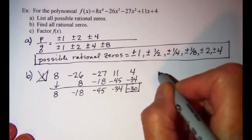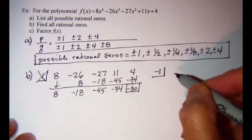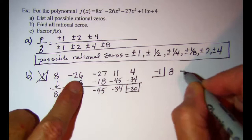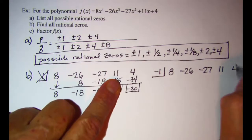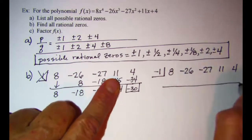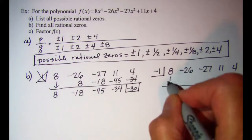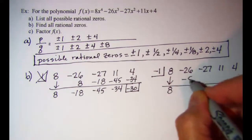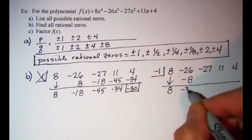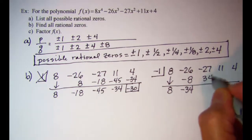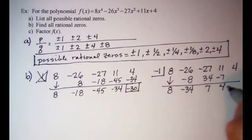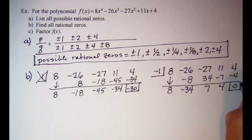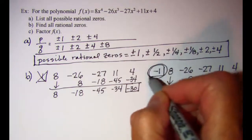Let's try k = -1 with the same coefficients: 8, -26, -27, 11, and 4. Working through: 8, then -8 gives -34, then 34 gives 7, then -7 gives 4, then -4 gives a remainder of 0. So -1 is one of my zeros.